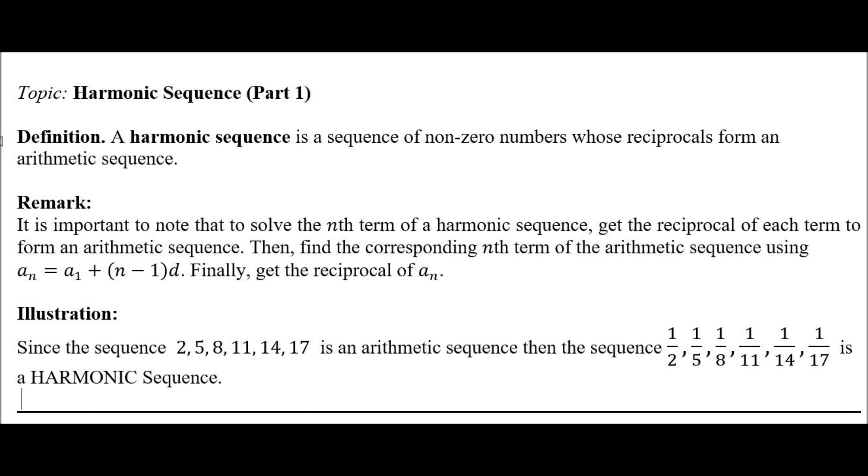For our illustration, since the sequence 2, 5, 8, 11, 14, 17 is an arithmetic sequence having a common difference of 3, then the sequence 1/2, 1/5, 1/8, 1/11, 1/14, 1/17 is a harmonic sequence. Since 1/2 is the reciprocal of 2, 1/5 is the reciprocal of 5, 1/8 is the reciprocal of 8, 1/11 is the reciprocal of 11, 1/14 is the reciprocal of 14, and 1/17 is the reciprocal of 17.